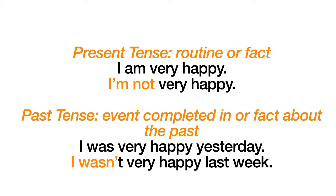For present tense: 'I am very happy' — talking about a fact right now or a state of being. Or 'I'm not very happy' — a state of being or fact about right now. In the past tense, we talk about a completed event or state in the past: 'I was very happy yesterday.' 'I wasn't very happy last week' — 'I was not very happy last week.' We're talking about a state of being in the past.